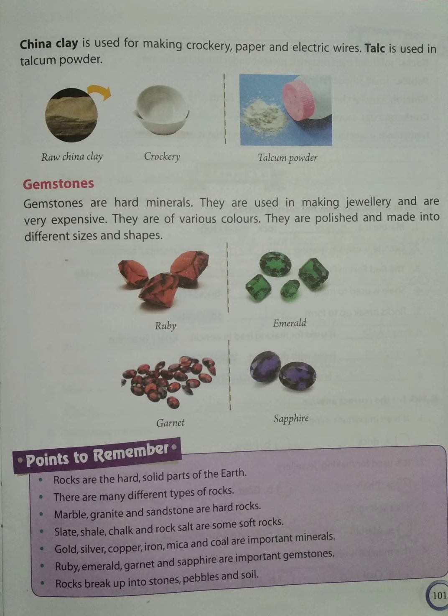Some more examples are gemstones. Gemstones are hard minerals. They are used in making jewelry and are very expensive. Few examples of gemstones are ruby, emerald, garnet, and sapphire. They are polished and made into different sizes and shapes so that we can use them to make jewelry.